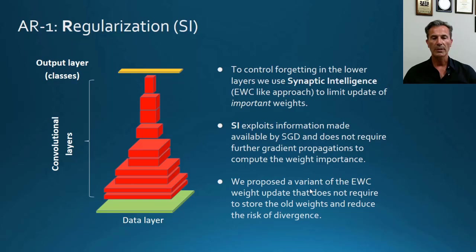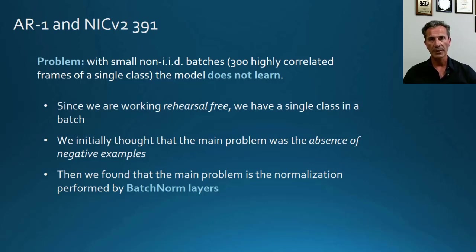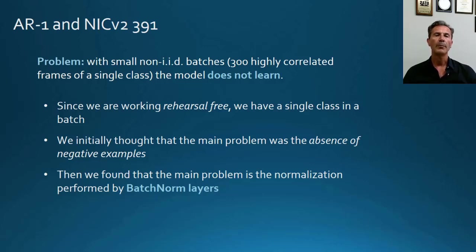We also proposed a variant of the Elastic Weight Consolidation update rule that is more robust with respect to training and does not require storing the previous weights. The performance of AR-1 on Core50 is quite good in NI, NC, and also NIC settings, except for the third NIC case with 391 incremental batches, where AR-1 is not able to learn without rehearsal. We initially thought the problem was the very small, highly correlated batches, but after deeper study, we understood the main problem is different.